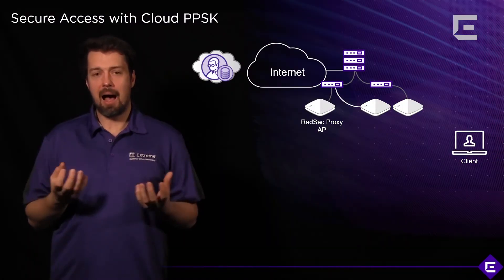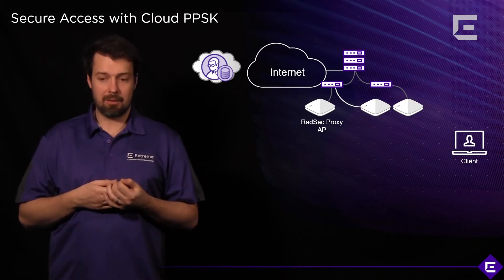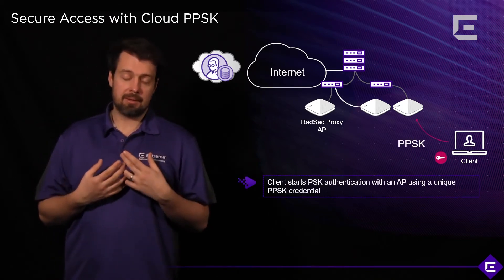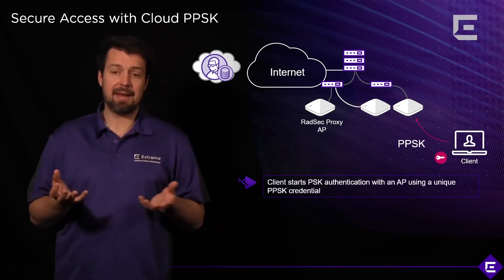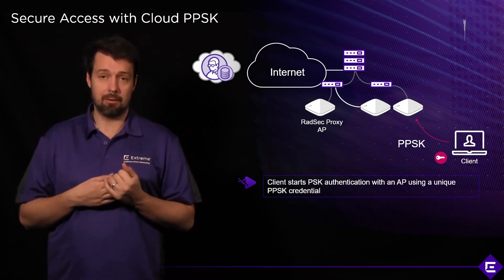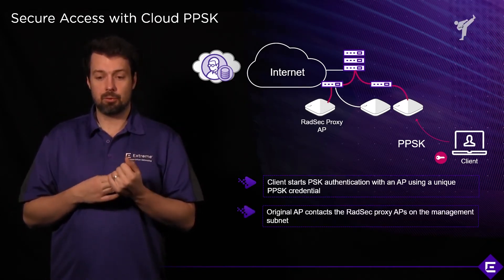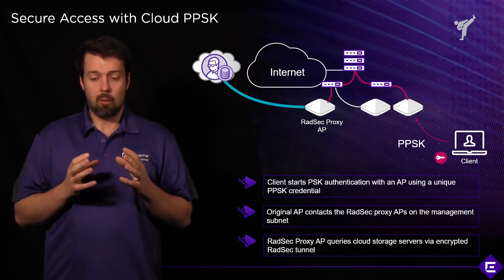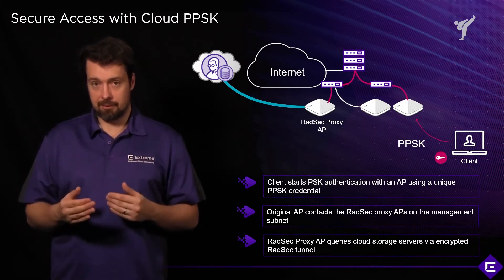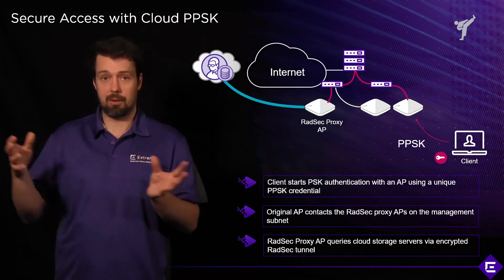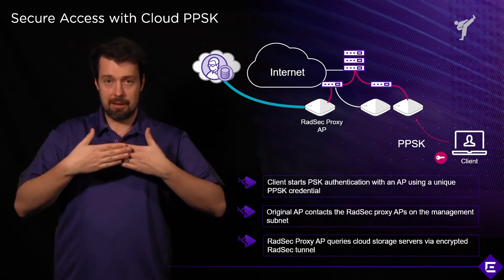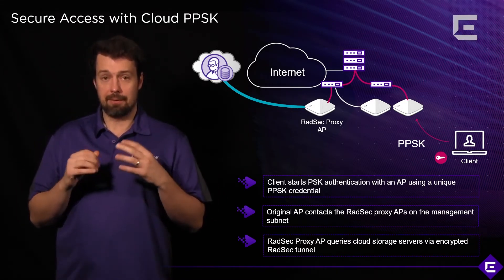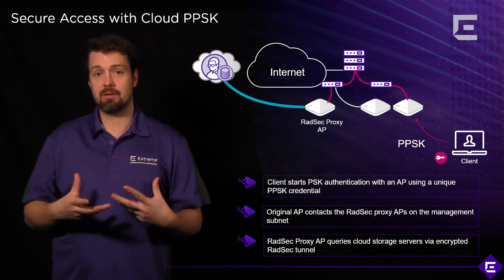Now let's look at how cloud-based PPSK authentication works. When a client device requests access, if it connects to a RATSEC proxy AP, that AP uses the already-established tunnel to authenticate the user against the user database in Extreme Cloud IQ. That tunnel is encrypted, so even though traffic passes through the public internet, credentials are only verified within a secure, encrypted tunnel — that's why we use RATSEC, and RADIUS within TLS.